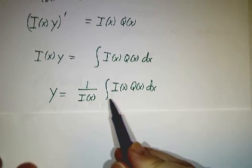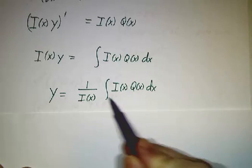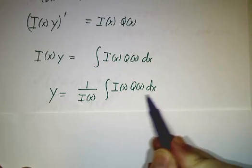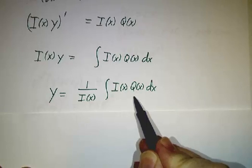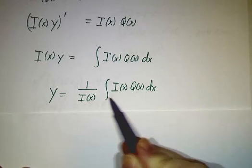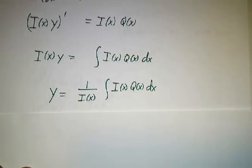Now, there's always a constant lurking in here. This isn't just one function. This is something plus c. And so you always wind up with an answer that's something plus c over i.